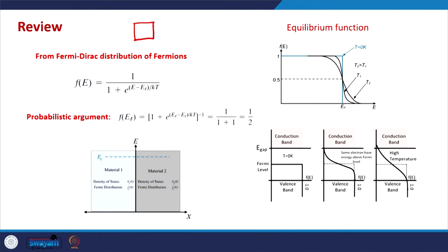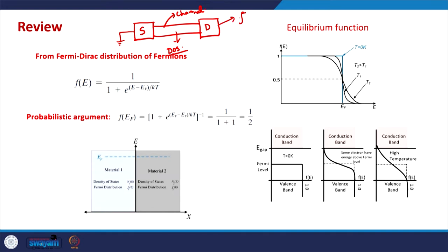We have been discussing that the number of available states in a device depend on the density of states in the channel. So, if this is a two-terminal device in which we have a source, a drain, and a channel, the number of available electronic states depend on the density of states of the channel. The electronic population in the source and drain contacts is governed by the Fermi function, also known as the Fermi-Dirac function.